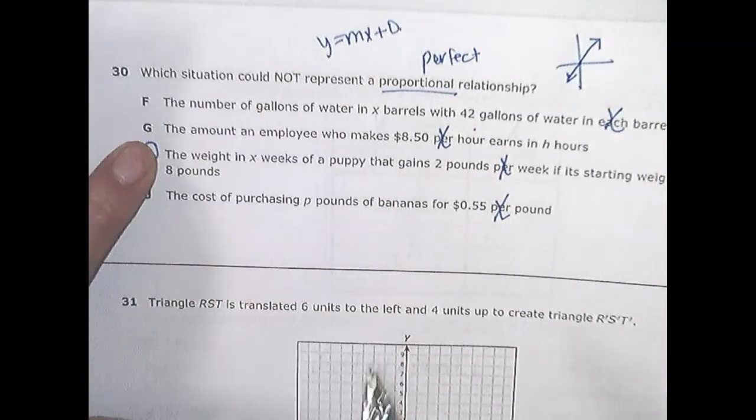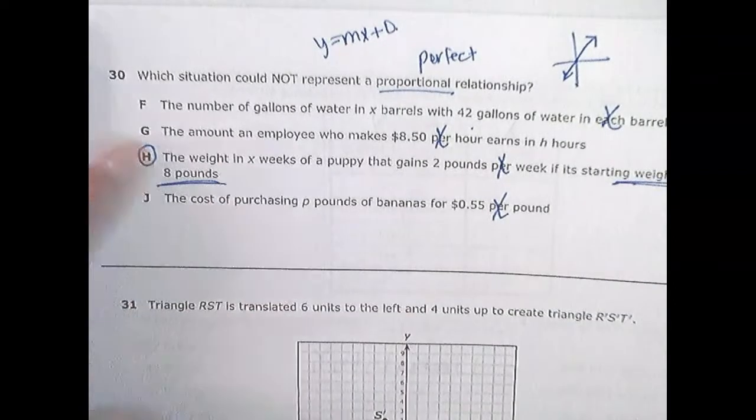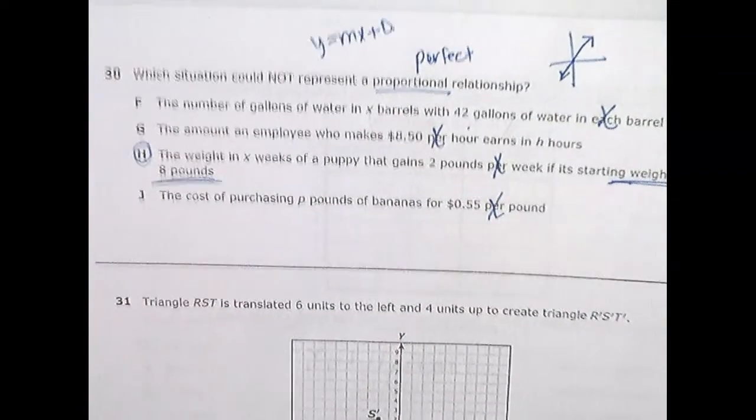So it should have 0 fee. This says 42 gallons of water in each barrel. This is $8.50 per hour, no more, no less. This is 2 pounds per week and starts at 8 pounds. And this one is 55 cents per week. Which one's different? The answer is H. Why? Because it has an extra number of 8. And that's your starting. If it was proportional, it started at 0.